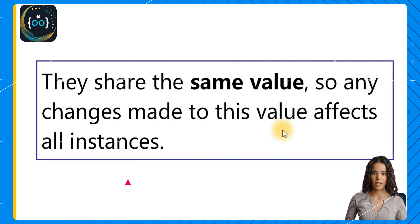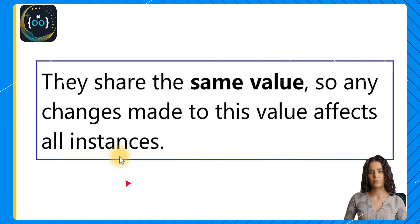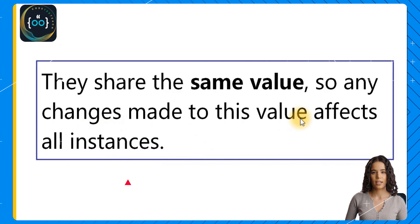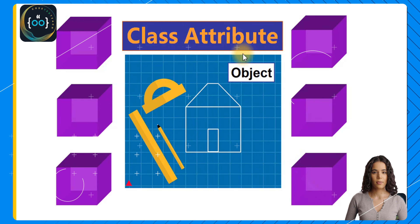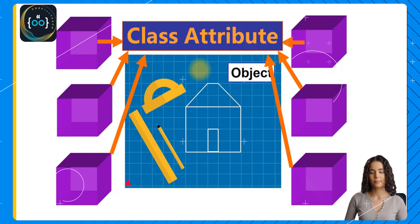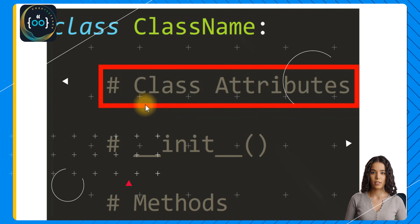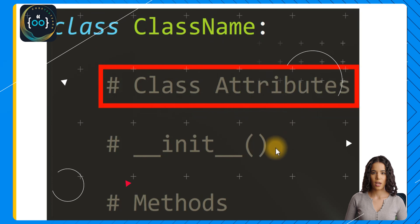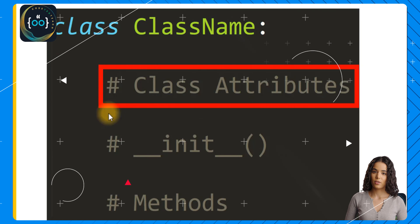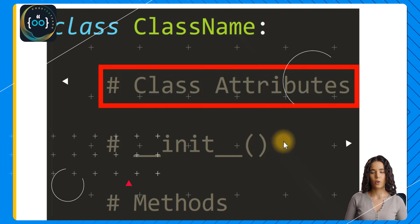Any changes made to this value affect all instances. That is something you really have to be aware of when you decide to make an attribute a class attribute — any changes you make to the value affect all instances. For example, if we have a class attribute defined in our class and we change it, all instances are affected because they take the value from the same source. Class attributes are usually defined before the init method in a class.